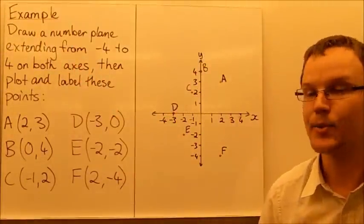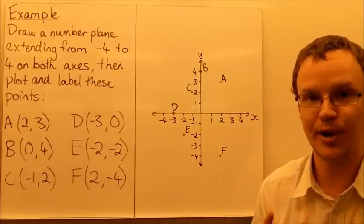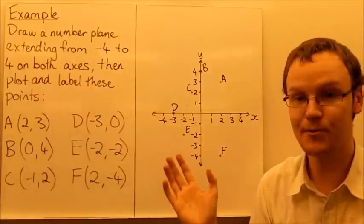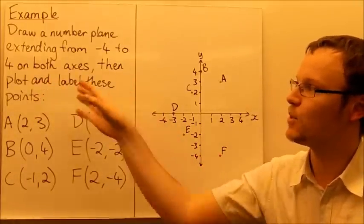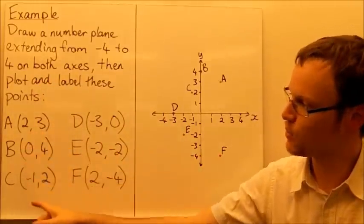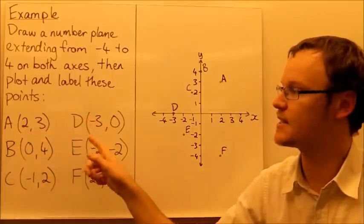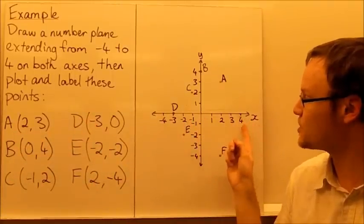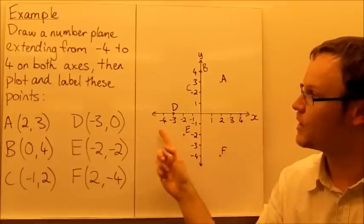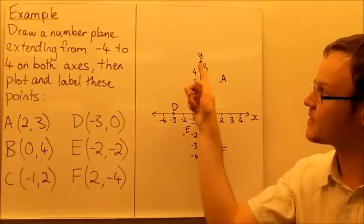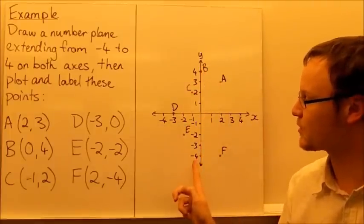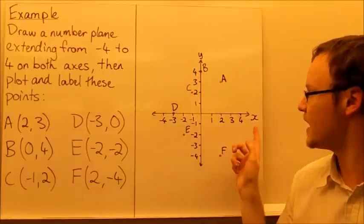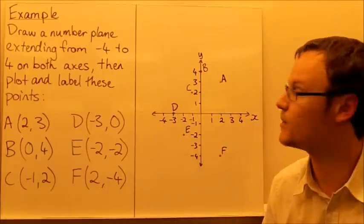Having a look at an example here, we need to draw a number plane extending from negative 4 to positive 4 on both axes, then plot and label some points. So here are the points we've been given: A, B, C, D, E, and F. So we've drawn the number plane here, it extends from positive 4 to negative 4 on both axes. So here's the y-axis, going from negative 4 to positive 4, and our x-axis going from negative 4 to positive 4.